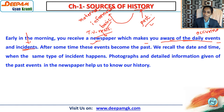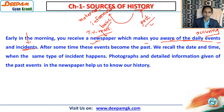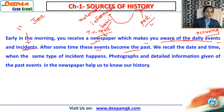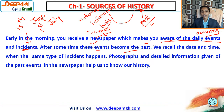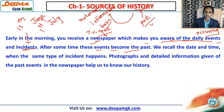So we get that information from newspapers. After some time, these events become the past. If you are talking about things happening on 15th June, then after some time — say on 1st July — that 15th June becomes the past. Whatever incidents or events happened, after some time they become the past.